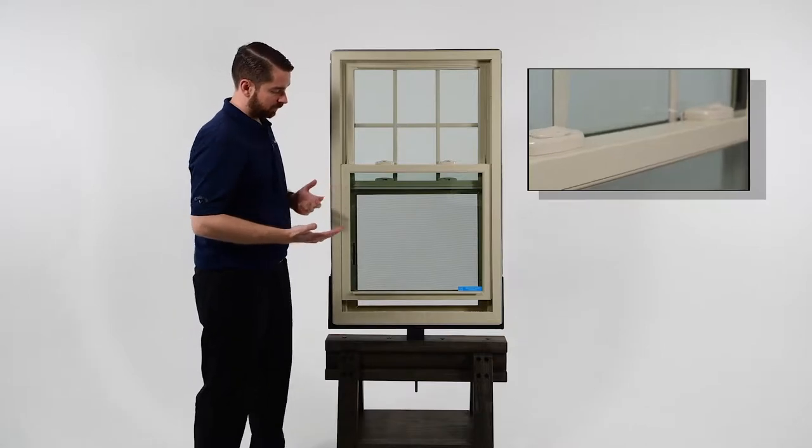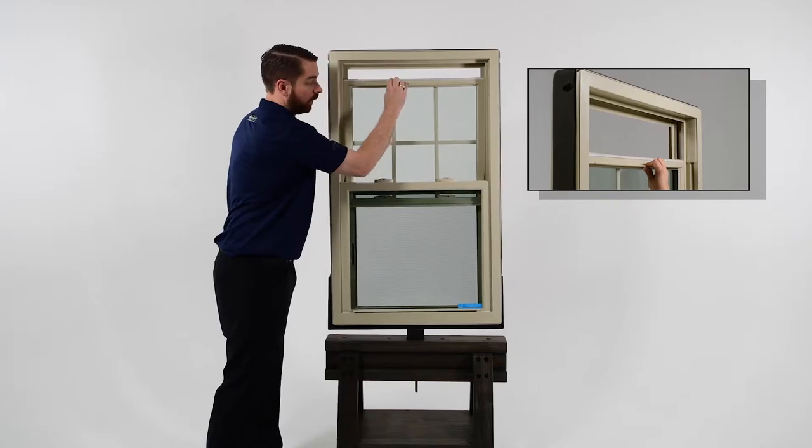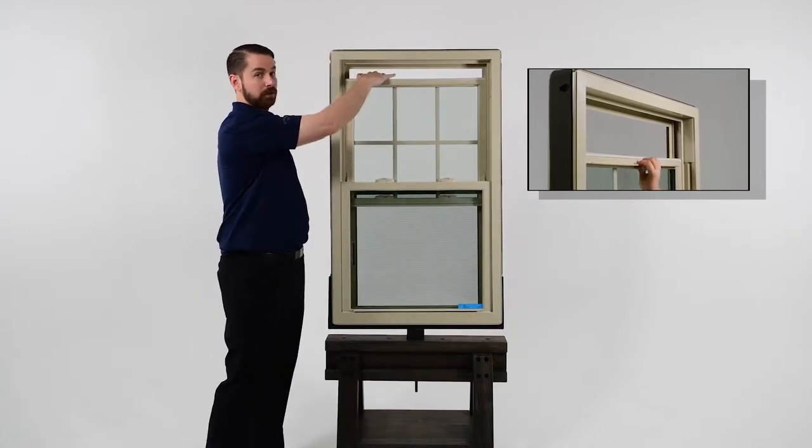And on the double hung windows, you can allow ventilation in the bottom with the night latches, or you can close the bottom and allow ventilation through the top.